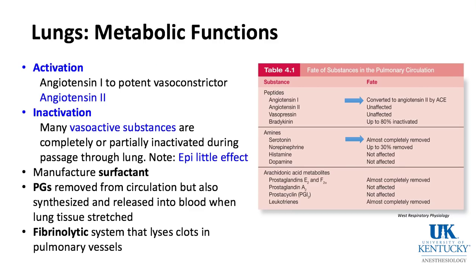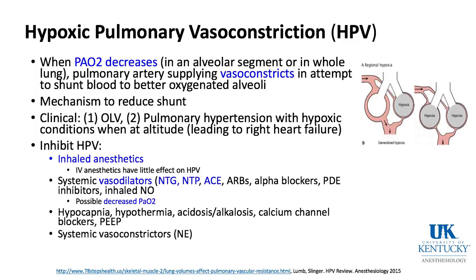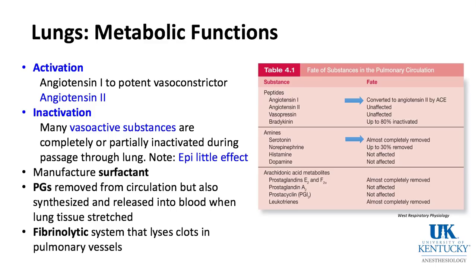Metabolic functions of the lung: angiotensin 1 is converted to angiotensin 2 in the lung — ACE inhibitors block this conversion. The lung inactivates serotonin (almost completely removed), most norepinephrine, and many prostaglandins, while epinephrine is largely unaffected. The lung also produces surfactant, synthesizes and releases prostaglandins when stretched, and the fibrinolytic system in the lung breaks down clots.